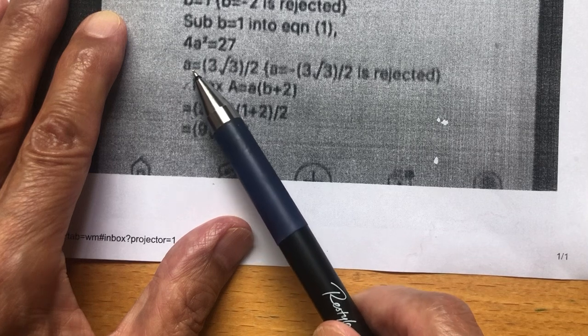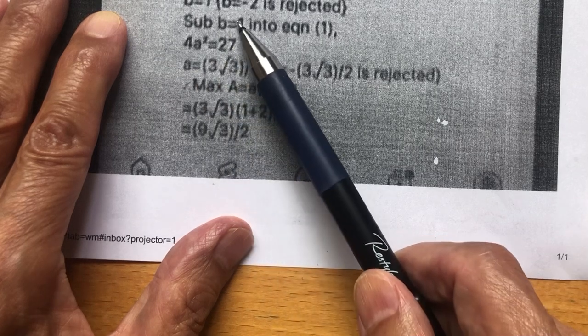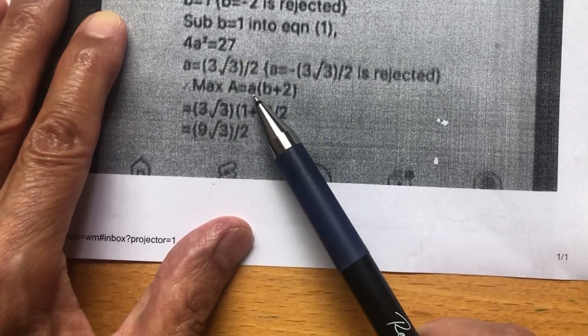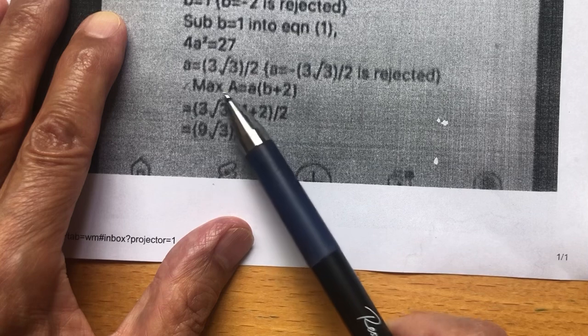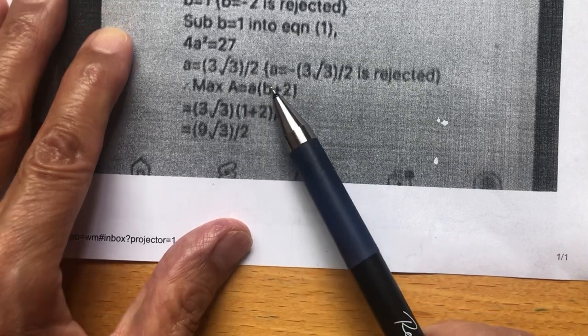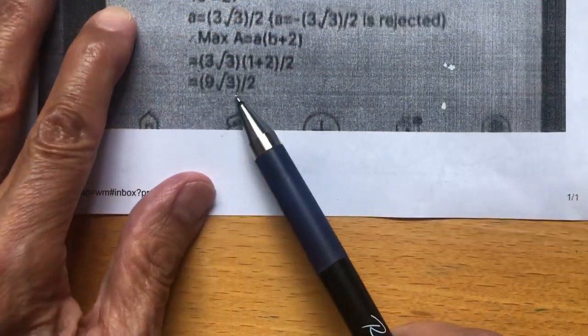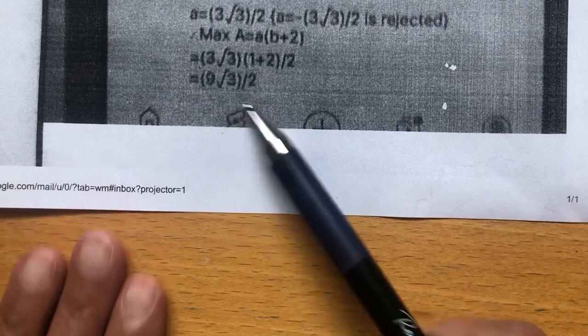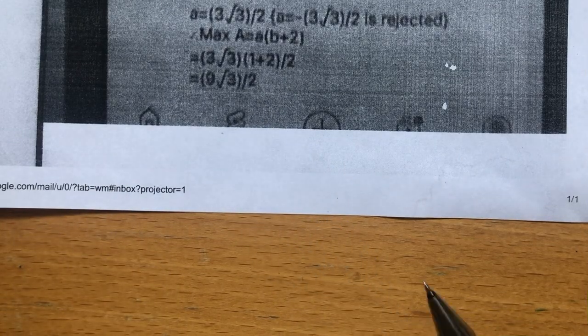Once I have a and I already have b, I substitute a and b into the area formula. I get the maximum area. So that's how I do this problem.